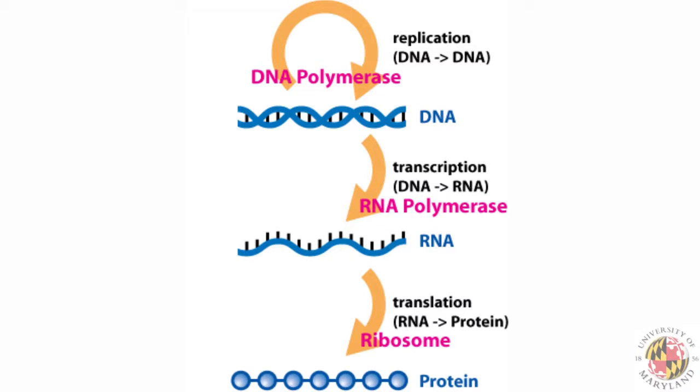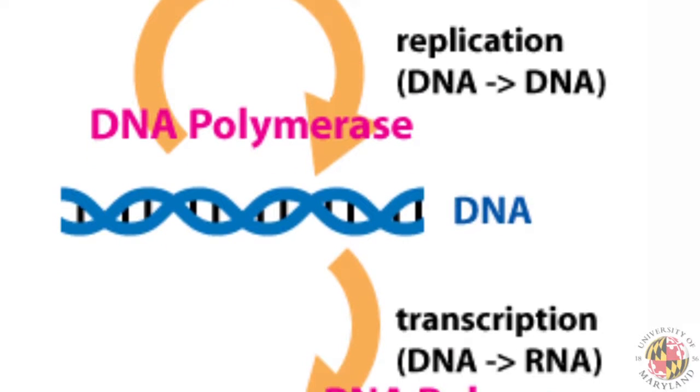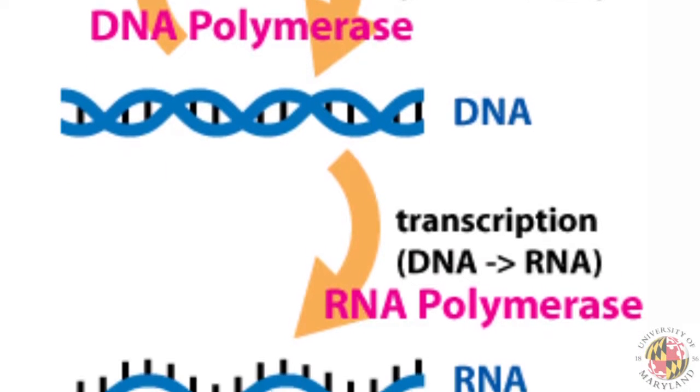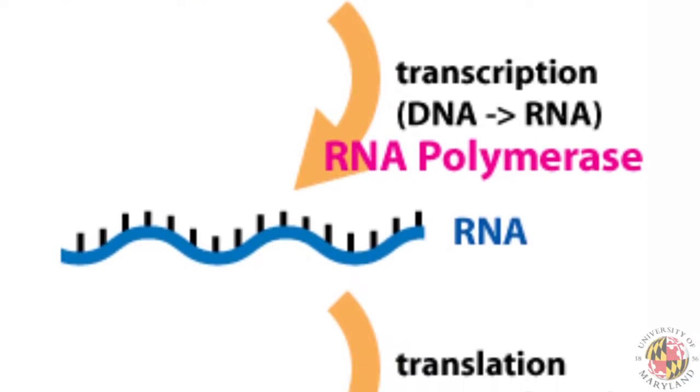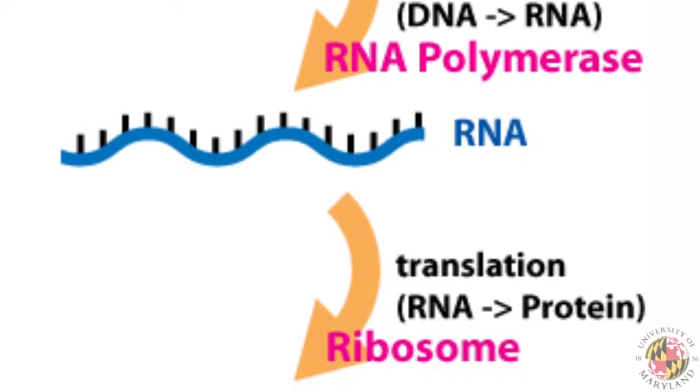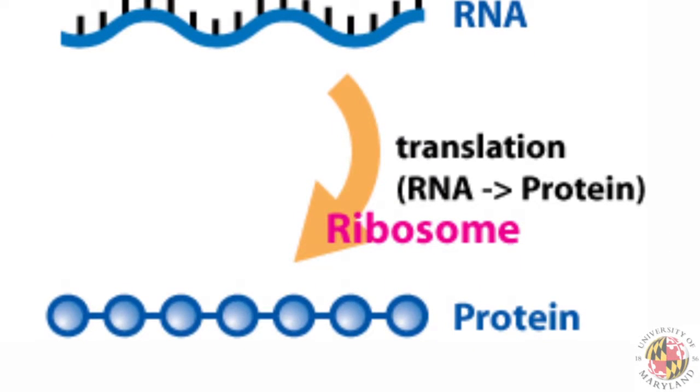I'm Kevin Nyberg, a graduate student in Dr. Carlos Machado's lab. I'm interested in how advances in genome and sequencing technologies can help us deepen our understanding of how biology works in an organism. There's a classic assumption called the central dogma of molecular biology: DNA encodes information in a gene, which is copied into a messenger RNA, which codes for a protein. The protein is what does all the work in the cell and in the organism.